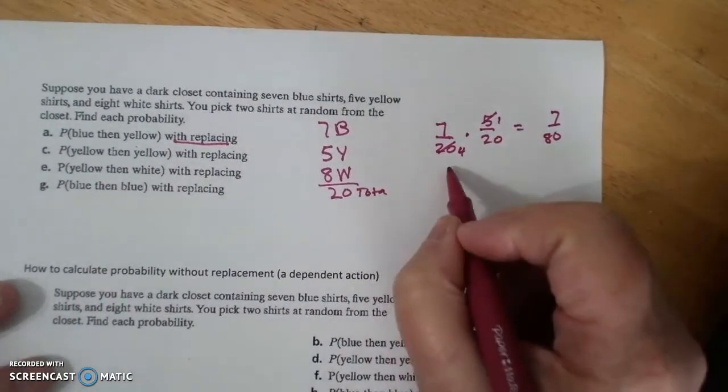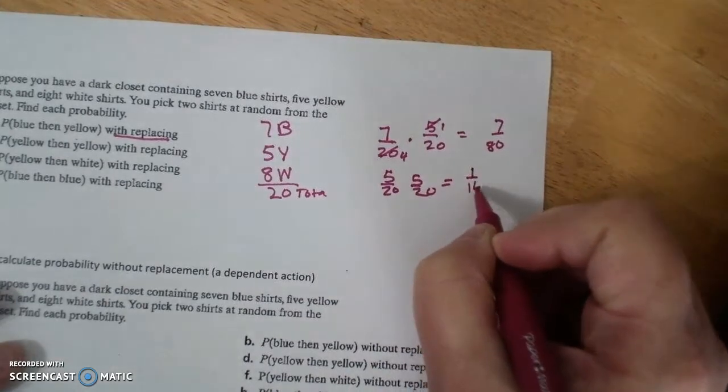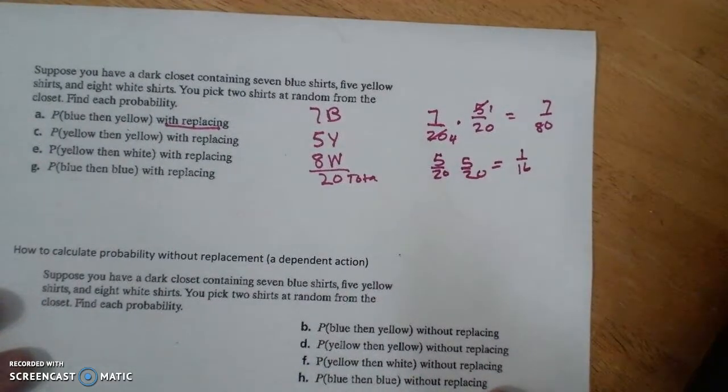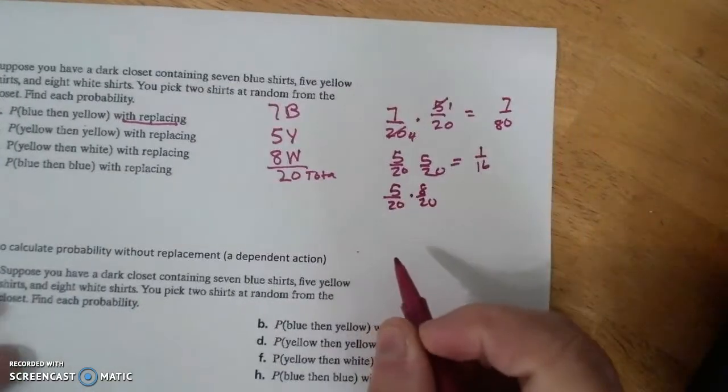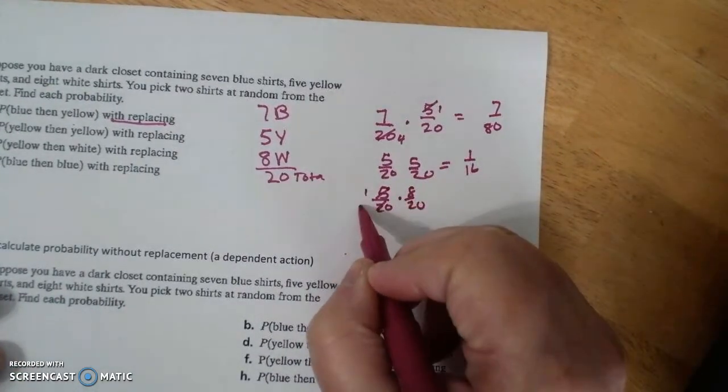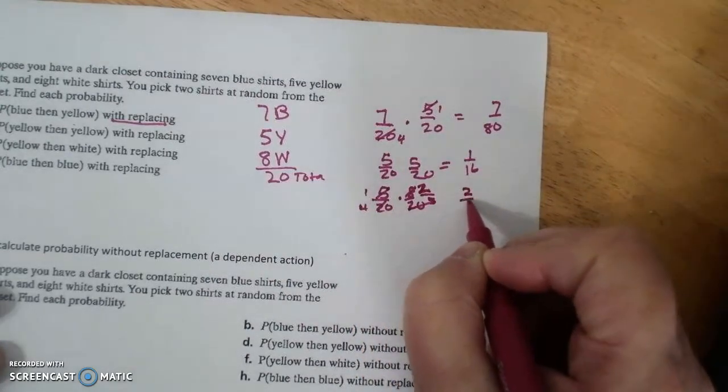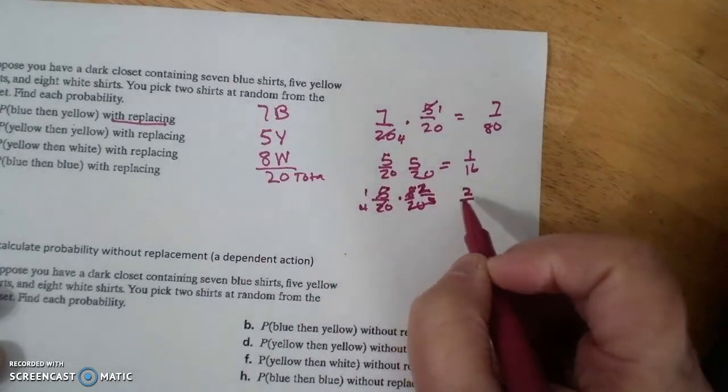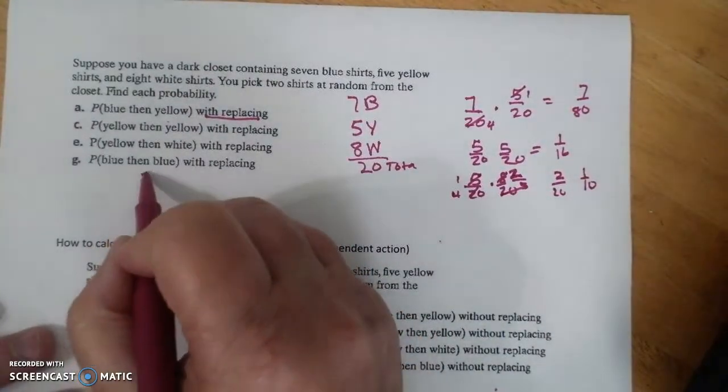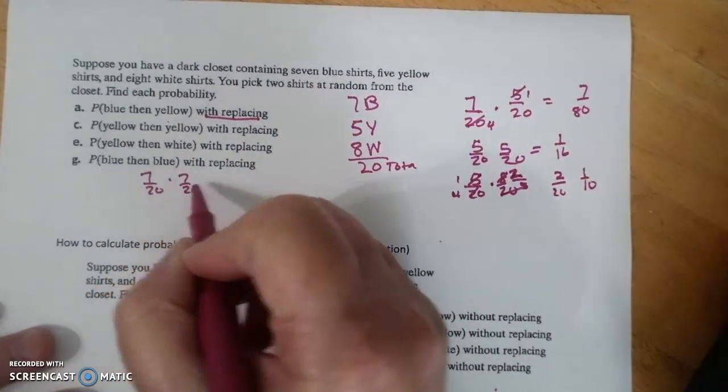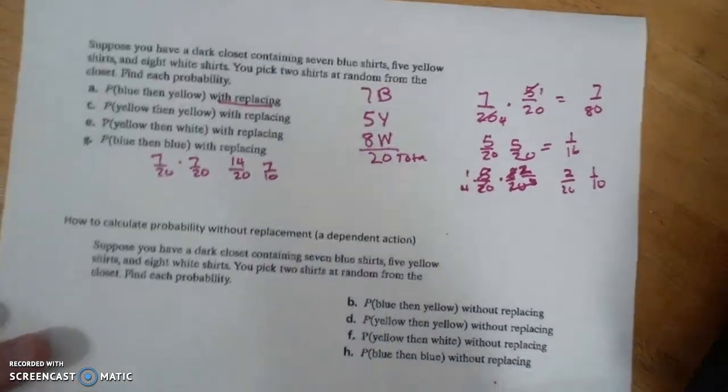Yellow then yellow. 5 over 20, 5 over 20. That's 1/4, 1/4. 1/4 times 1/4 is 1/16. Yellow then white. 5 over 20 times 8 over 20. Simplify before you multiply. That's 1/4. That's 2/5. That's 2/5. 2/20ths, which is 1/10. Blue then blue. 7 over 20 times 7 over 20. 49 over 400, which is 7/10, which is 70%.